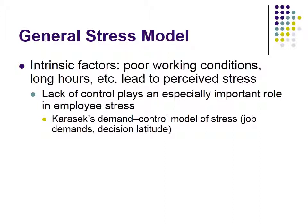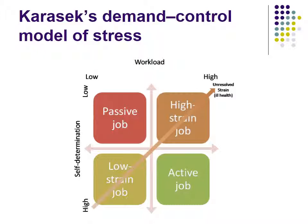Karasek created a two-by-two model expressing this called the demand and control model of stress. The job demands are the intrinsic factors, and decision latitude is the control. This is a quick organizational diagnostic tool to identify which jobs may be a problem and which are not. Like a lot of grid models in IO psychology, the idea is to move jobs to where you want them to be.